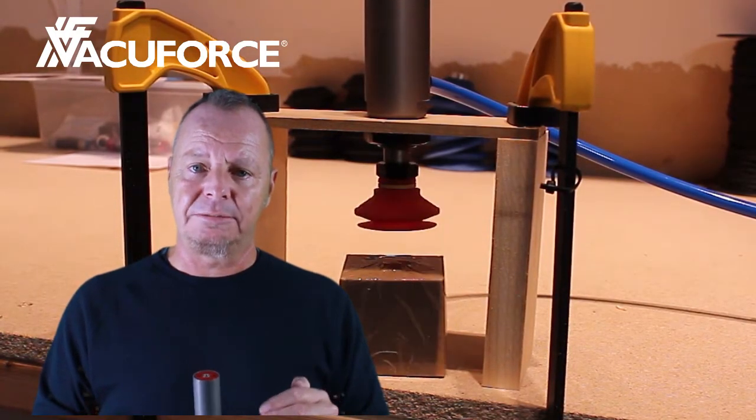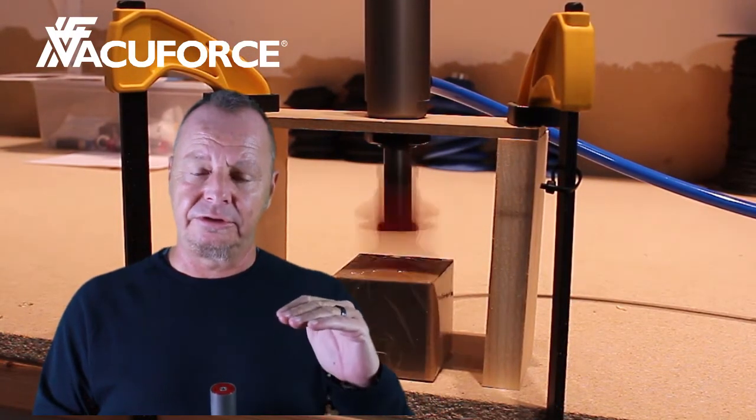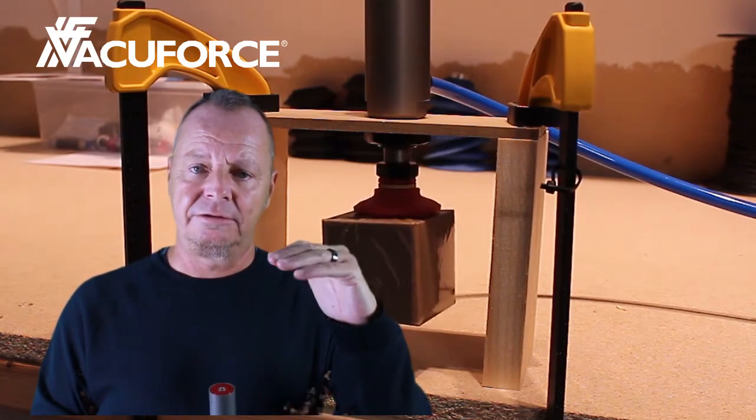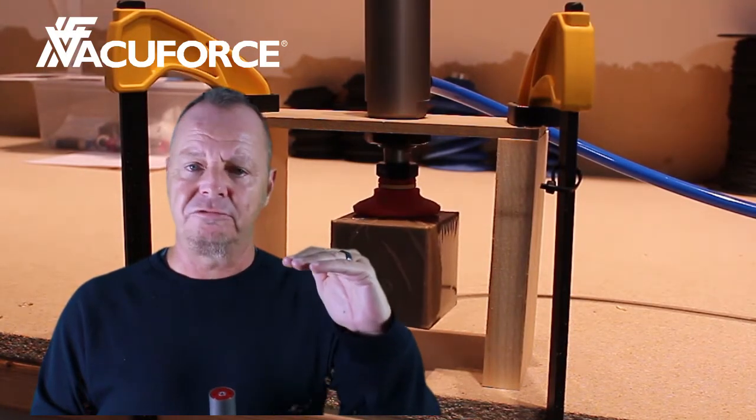The following video is a bench test of the vacuum cylinder. As you can see, vacuum is applied, the cylinder extends, the cup grips onto the box, it retracts automatically, vacuum is turned off, and the cup releases the box.